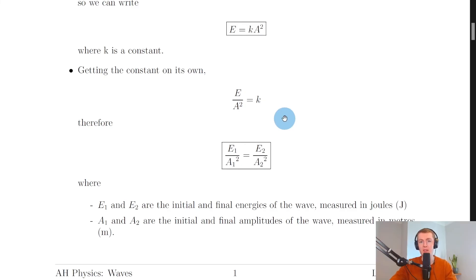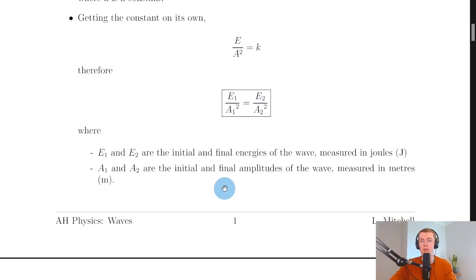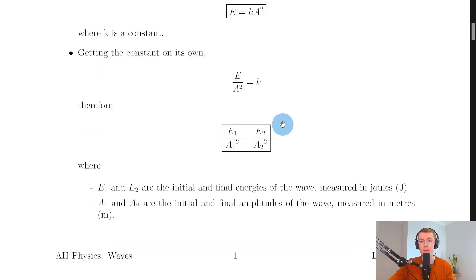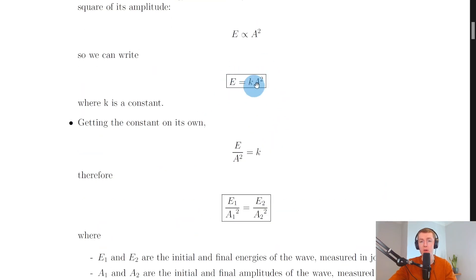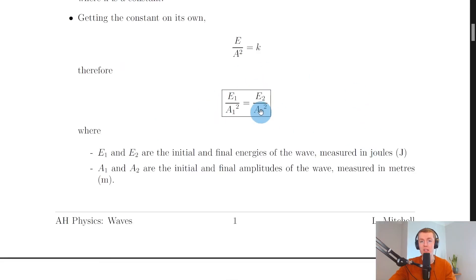We did this in National 5 and Higher for things like the inverse square law for light and the gas laws. E₁/A₁² = E₂/A₂² is just another way of saying the ratio of energy to amplitude squared is constant, where E₁ and E₂ are the initial and final energies measured in joules, and A₁ and A₂ are the initial and final amplitudes measured in metres. Note that this equation doesn't appear on the relationship sheet in the exam, so it's helpful to remember it or derive it from E = kA², which is on your equation sheet. Remember to square the amplitudes on the bottom — that's something pupils often forget.